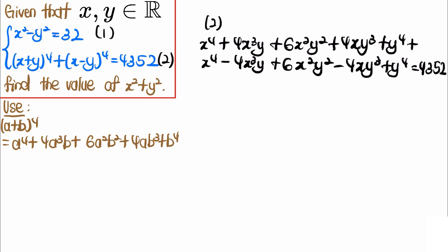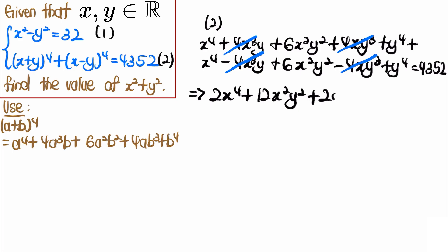We can see that the 4x³y and 4xy³ terms cancel between the two expansions. So we are left with 2x⁴ plus 12x²y² plus 2y⁴ equals 4352.